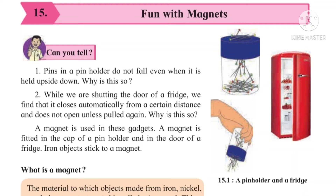Does anyone know? Here is another example. While we are shutting the door of a fridge, we find that it closes automatically from a certain distance, and does not open unless we pull it again. So why does this happen? When we keep the pin holder upside down, the pins do not fall, and the fridge door also closes automatically from a certain distance. Why does this happen?